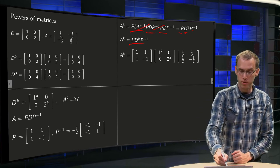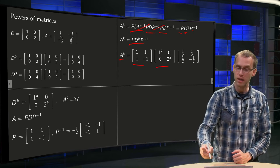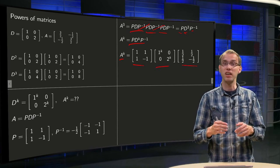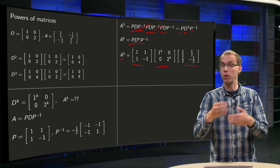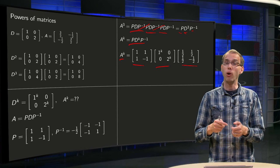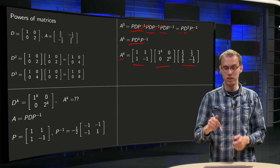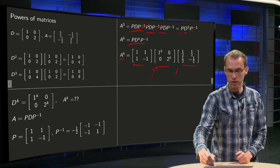So, A to the power k becomes P times D to the power k times P inverse. So instead of k multiplications, and k can be 10 or 100 or 1000 or whatever, you only have to do 3 multiplications, this one over here, and this one over here.